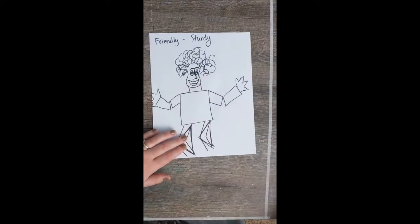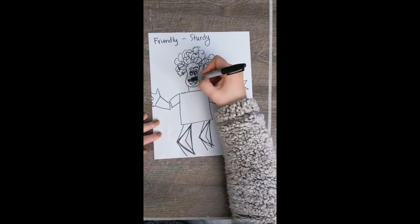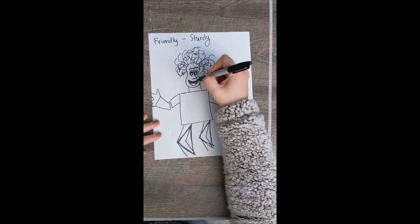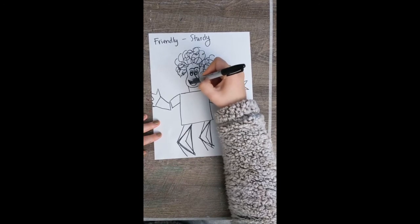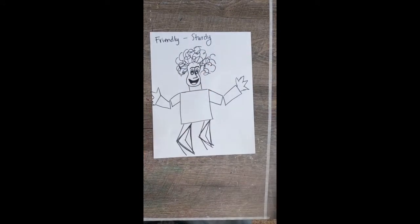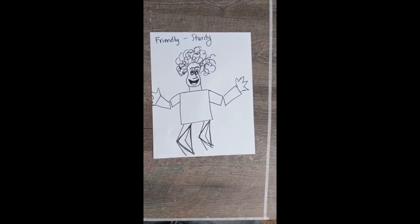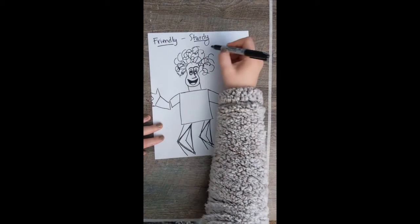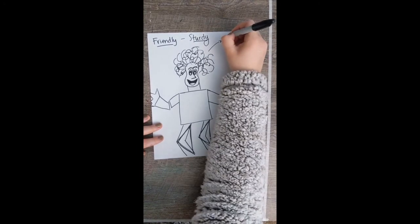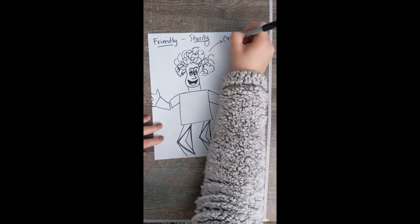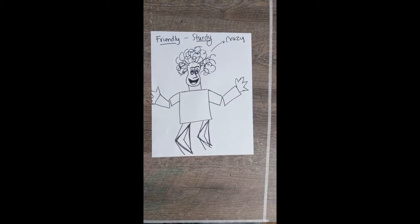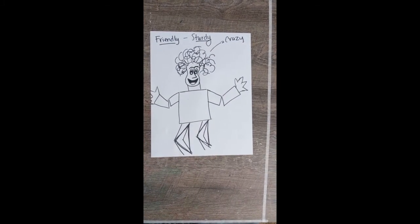And I'm going to have them smiling, but no teeth. I don't know why. I just really am not feeling teeth here. There we go. So I've made the basic shape of my character. I wanted my character to be friendly, sturdy. The hair is showing a little bit, a little bit crazy. And there we go. I've got my basic shape.